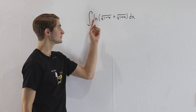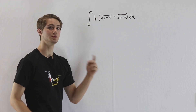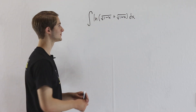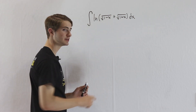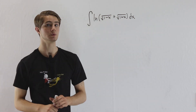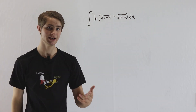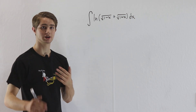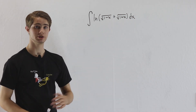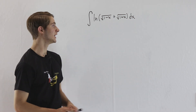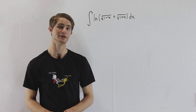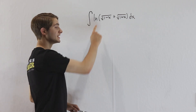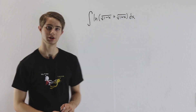Normally, if you have the square root of 1 minus something, you would want to substitute sines or cosines. And if you have the square root of 1 plus something, you would want to substitute tangents. But we can't do both at the same time, so we're kind of stuck with trig sub. It would be better to start by doing integration by parts in order to get rid of this natural log.